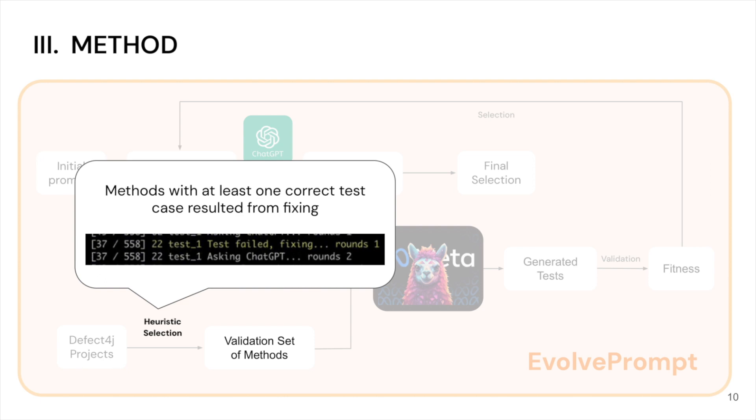we choose a subset of methods from the target project in the Defect4J dataset as our validation set. These methods are chosen from the methods that have at least one correct test case resulted from the repairing phase when run with the initial ChatUnitTest pipeline.